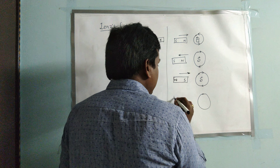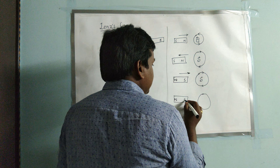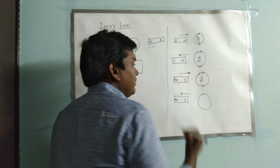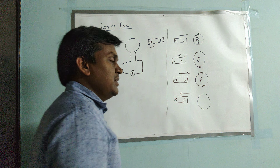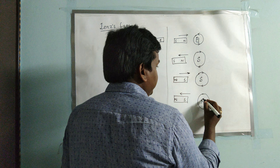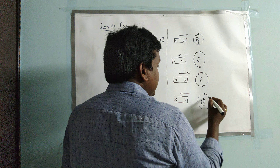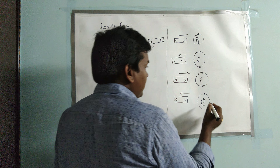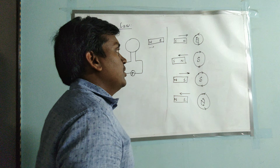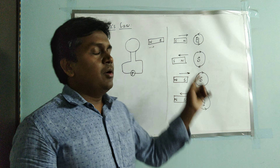Consider a fourth situation: a coil and a bar magnet with north pole facing left and south pole facing the coil. If the bar magnet is moving away from the coil, an opposite pole — north — is induced in the coil. The induced current produced in the coil is in the anti-clockwise direction. These are the four different situations covered.